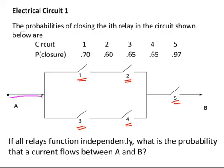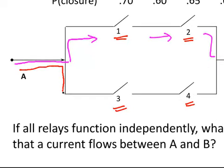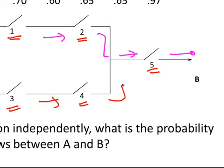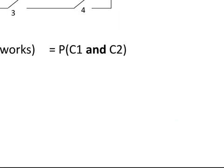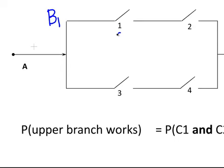The current must flow either from A up through circuits 1 and 2 and then through circuit 5 to reach B, or it can start at A and go through circuits 3 and 4 and then up through 5. So it must go one way or the other, or potentially both options are open to it. We're going to define the upper branch B1 comprising circuits 1 and 2, and the lower branch B2 consisting of circuits 3 and 4. We'll disregard C5 until later.